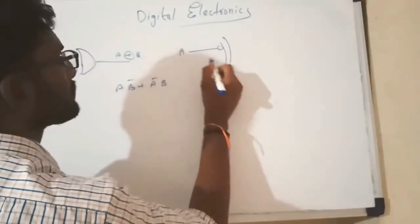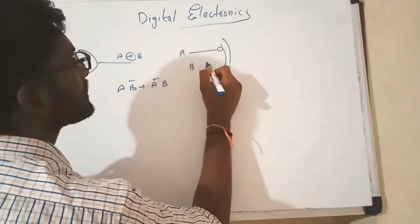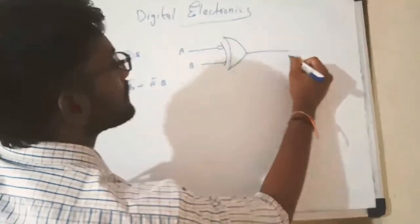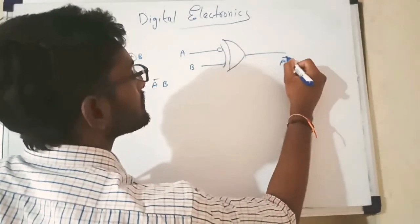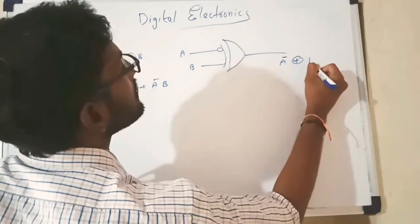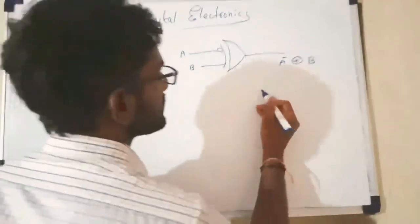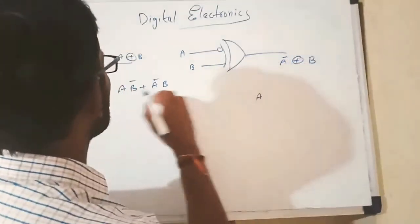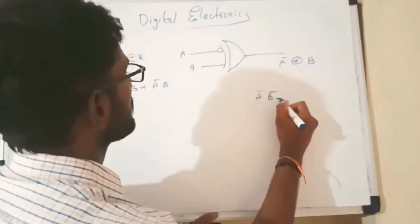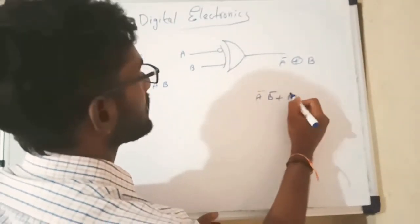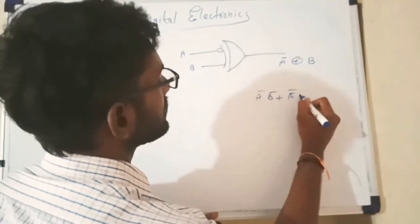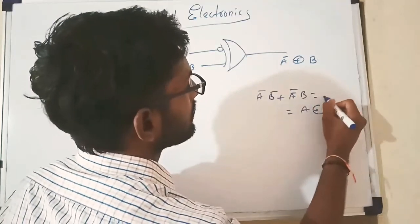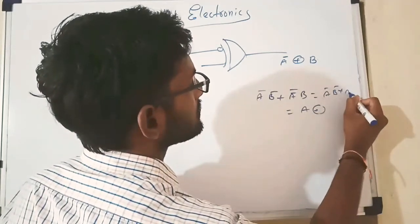I am adding a bubble here. A bubble is nothing but a NOT gate. Here A is connected to A-bar XOR B. This can be written as: replace A by A-bar. This gives A-bar·B-bar plus A-bar-bar·B, which is nothing but A-bar·B-bar plus A·B.